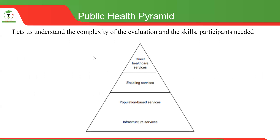We want to use the health pyramid to guide us in looking at the nature of health programs or services that we can implement. We have this pyramid with a wider base and a tipping tip. At the bottom we have infrastructure services, followed by population-based services, enabling services, and indirect healthcare services. Infrastructure services are at the bottom because they have a wider implication on the population and also require a lot of resources to implement.